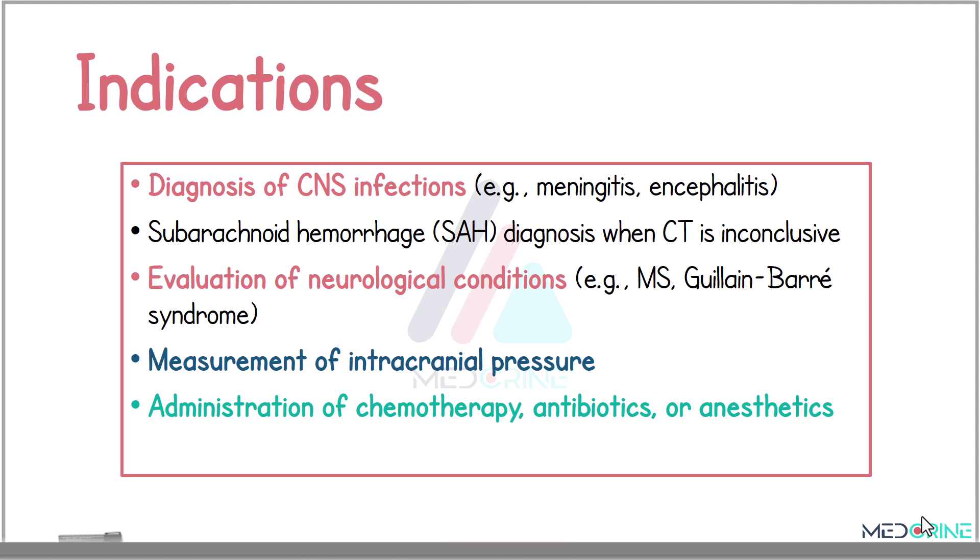A Lumbar Puncture is indicated in various clinical scenarios. Commonly, it is indicated in the diagnosis of central nervous system infections, for example meningitis or encephalitis, as well as identifying subarachnoid hemorrhage when imaging is inconclusive. It is also indicated in the evaluation of neurological conditions, for example multiple sclerosis or Guillain-Barré syndrome, and it helps in measuring intracranial pressure, and lastly, administration of chemotherapy, antibiotics, or anesthetic agents such as in spinal anesthesia or epidural anesthesia.